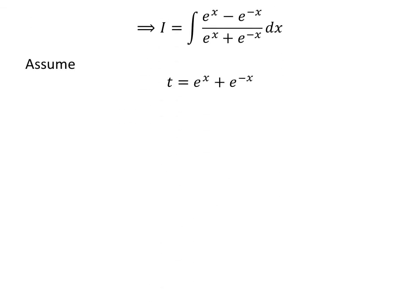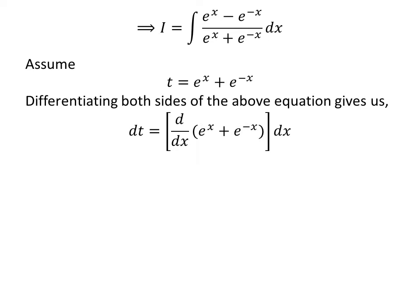We will apply the substitution method to solve the integral. Let us assume exponential of x plus exponential of minus x is equal to t. Taking the differential of both sides gives us the derivative of exponential of x plus exponential of minus x with respect to x, times differential of x, is equal to differential of t.